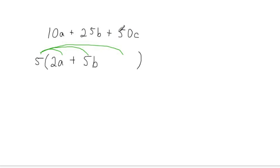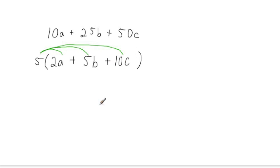We have one final term to take care of. The question we ask here is: what do we multiply 5 by in order to get 50c? In order to get 50, we have to multiply 5 by 10. And in order to get that factor of c, we need this c to be multiplied in there as well. This means that we can factor out a common monomial factor of 5 from this trinomial.